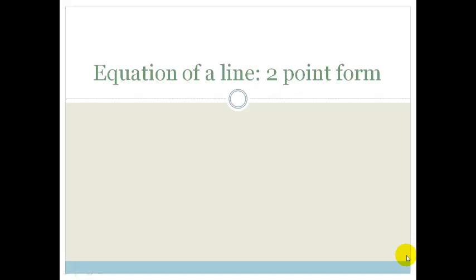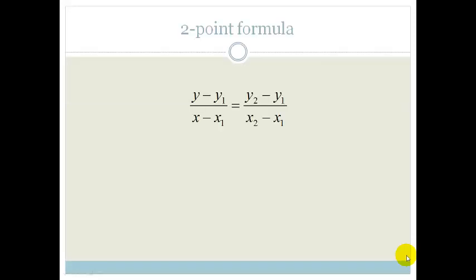Now, grade 11s, there are quite a few ways that you can find the equation of a straight line. This is one of the ways. So we're just going to go through this now, and then we're going to go through a couple of other ways, and then you can decide which you think is the best way and the most appropriate way, depending on the information that you're given. So, the equation that we use in the two-point formula is y minus y1 over x minus x1 is equal to y2 minus y1 over x2 minus x1.